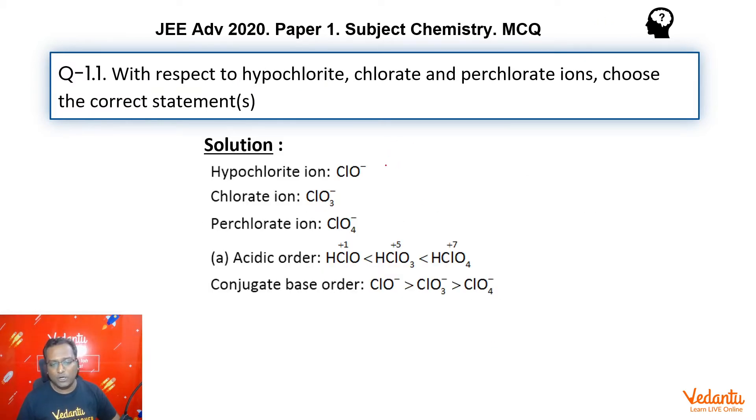If we want to talk about the basic strength of ClO-, we'll have to talk about the acidic strength of their conjugate acids. So, HOCl, HClO2, HClO3 and HClO4 are the conjugate acids of OCl-, ClO2-, ClO3- and ClO4-. Now, we know that the acidic order is this: HClO4 is more acidic than HClO3 and so on.